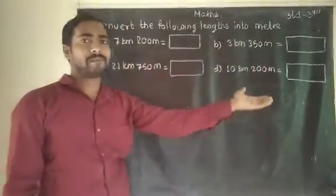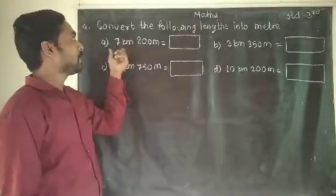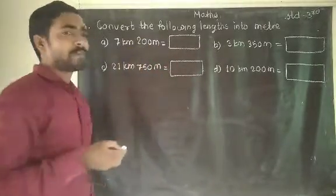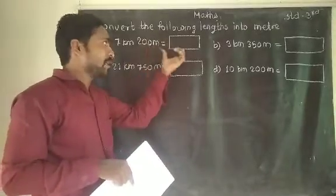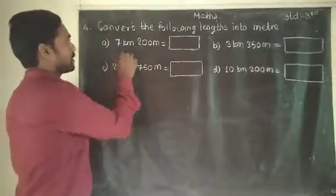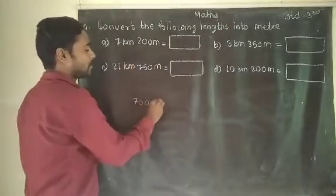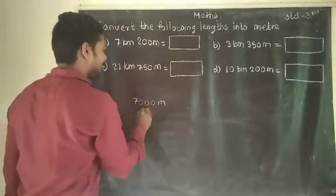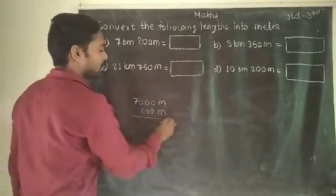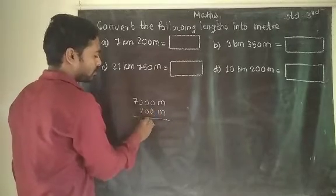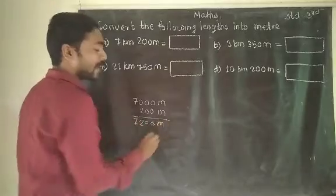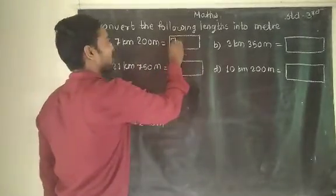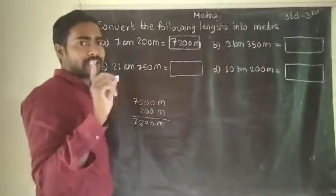First example: 7 kilometers and 200 meters. 7 kilometer means 7000 meters. And 200 meters stays as it is because it is already in meters. So simply: 7000 plus 200 equals 7200 meters. The answer for part (a) is 7200 meters.